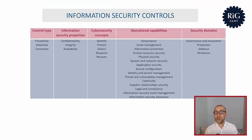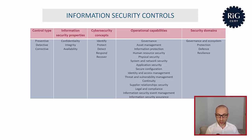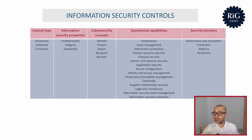Each security control is associated with a number of attributes, as shown in the table. By type, a control can be preventive (acting before a threat occurs), detective (acting when a threat occurs), or corrective. A control can also have multiple type attributes simultaneously. For example, the control referring to the disciplinary process applied when an employee violates a security policy is a corrective control, but it is also preventive because the disciplinary process acts as a deterrent to prevent personnel from violating company policies and procedures.